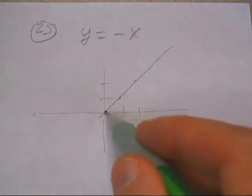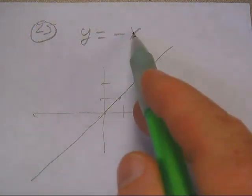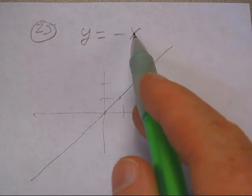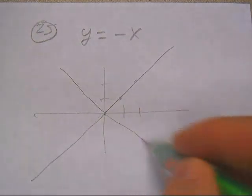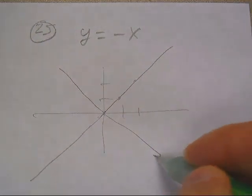So y equals x is this way. But y equals negative x - it's going to change all the other ones negative, and so it's actually going to split these other two quadrants in half like this.